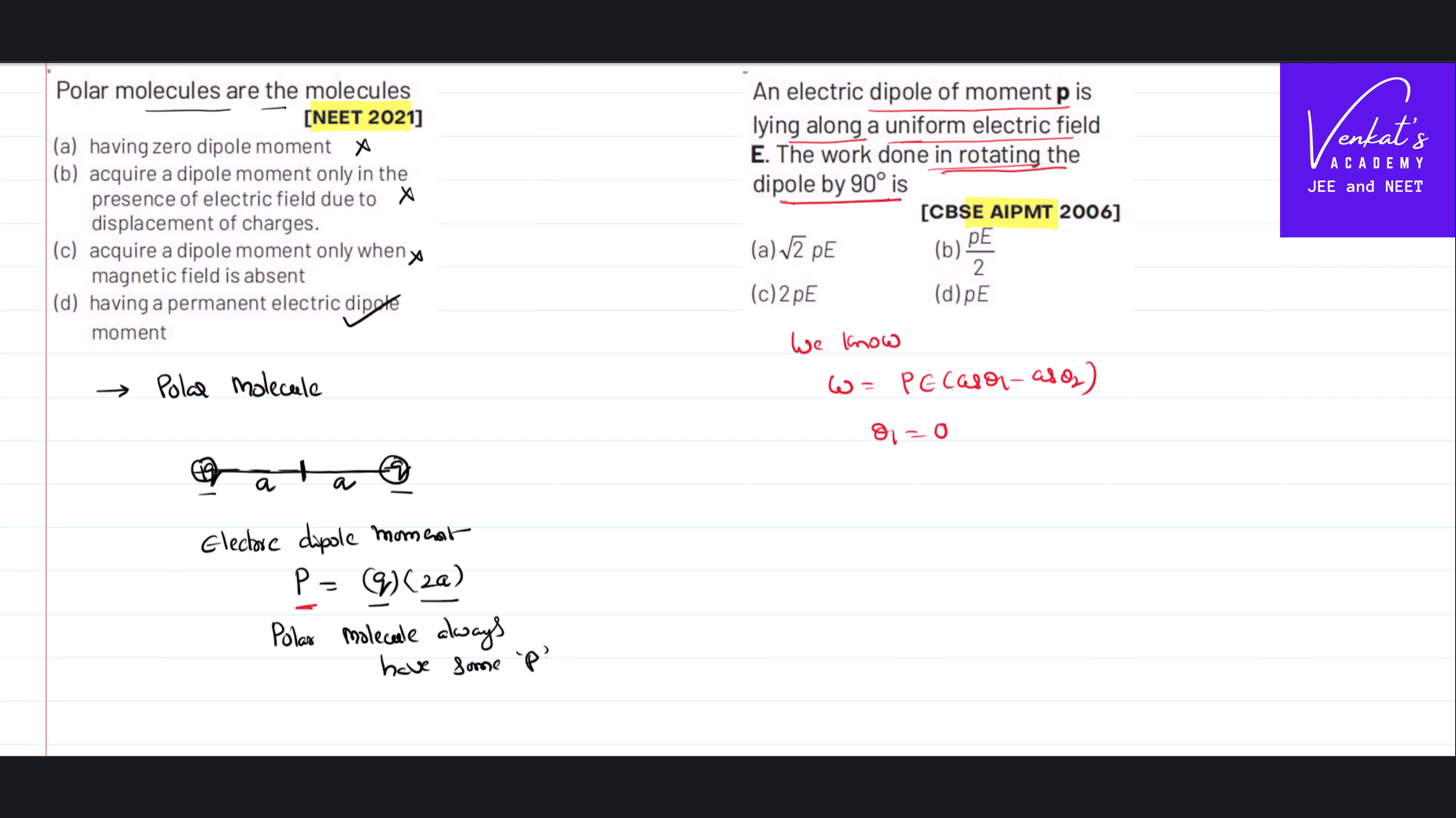An angle of 90 degrees - that means you are rotating from 0 degrees to 90 degrees. It implies work done equal to PE(cos 0 - cos 90). PE cos 0 is 1, cos 0 is 1, and cos 90 is 0. That is PE itself.